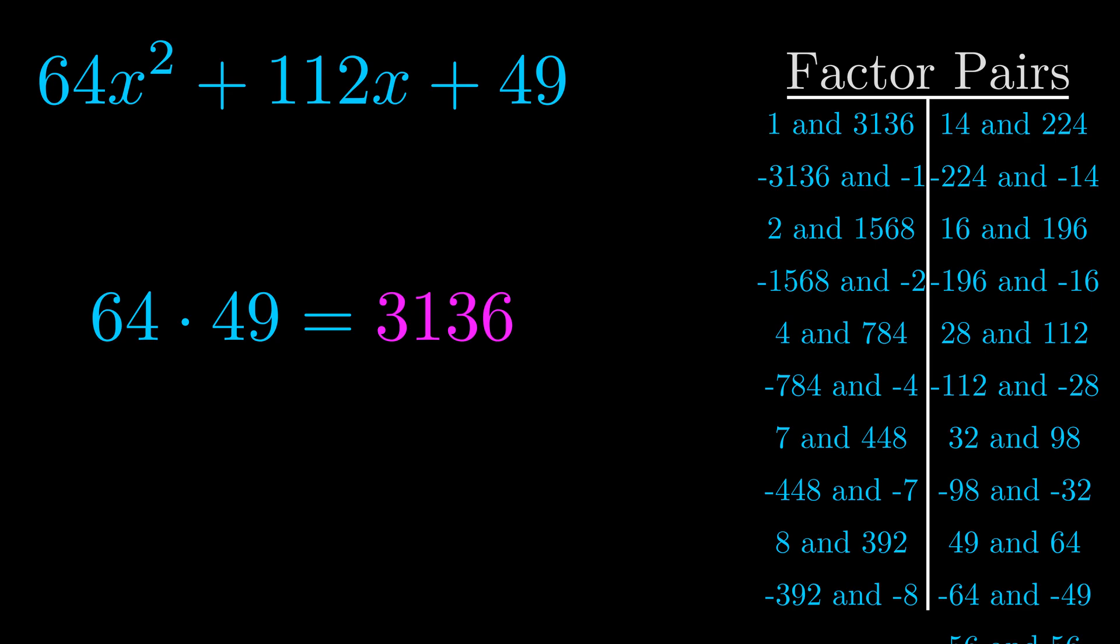The b value is the coefficient on the x term. That's the middle term, the one that we haven't done anything with yet. And really this is the only factor pair that we need.